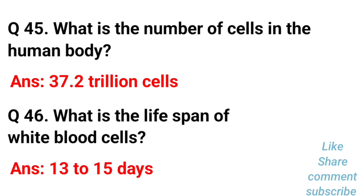What is the total number of cells in the human body? The human body has 37.2 trillion cells. What is the lifespan of white blood cells? The lifespan of white blood cells is 13 to 15 days.